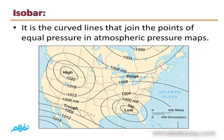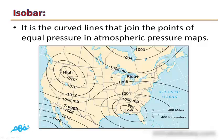An isobar is a curved line that joins points of equal pressure on atmospheric pressure maps. On these maps, curves join areas with equal atmospheric pressure — for example, all cities on one curve have the same atmospheric pressure of 1012 mb, and cities on another curve have 1008 mb.